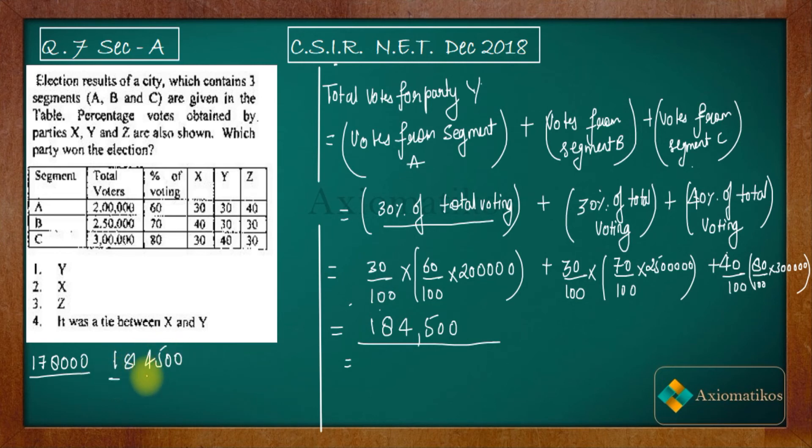Now let us calculate for Z. So calculations are a little big. If you will calculate for Z, you have to replace - instead of 30 you are going to have 40% here, so this thing will be 40 now. This thing will be 30.